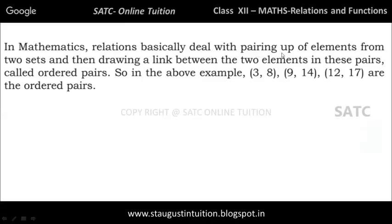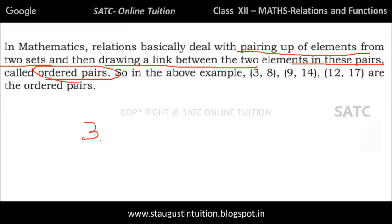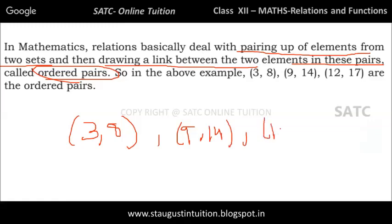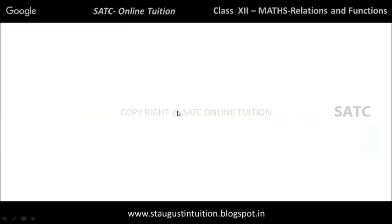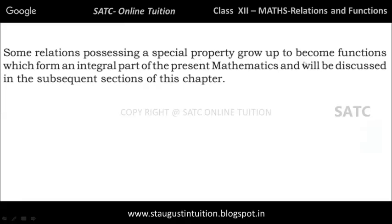Mathematics relations basically deal with the pairing up of elements from two sets and then drawing a link between the two elements in these pairs, called ordered pairs. For example, (3, 8) is an ordered pair because the difference between 3 and 8 is 5. Similarly, (9, 14) and (12, 17) are ordered pairs.